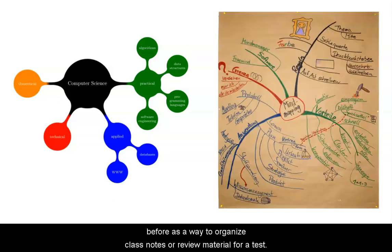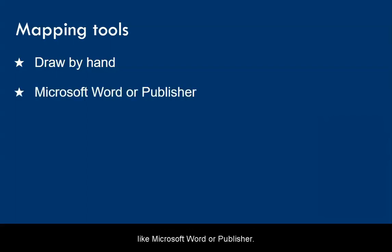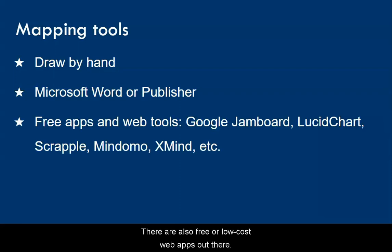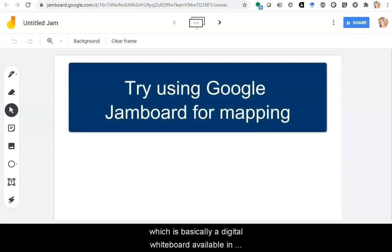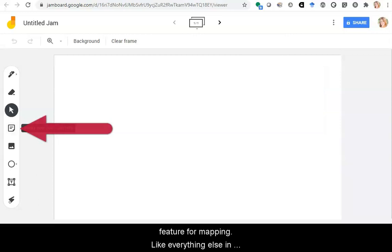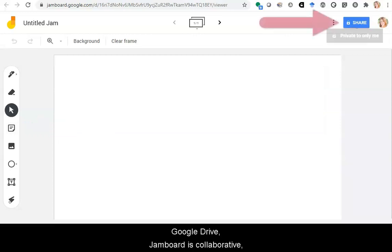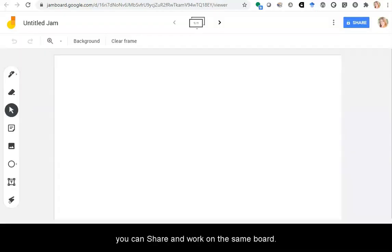Maybe you've created a map before as a way to organize class notes or review material for a test. You can draw maps by hand or use a software program like Microsoft Word or Publisher. There are also free or low-cost web apps out there for mapping. Today I'm using Google Jamboard, which is basically a digital whiteboard available in Google Drive. I like the sticky note feature for mapping. Like everything else in Google Drive, Jamboard is collaborative, so if you're working with a classmate, you can share and work on the same board.